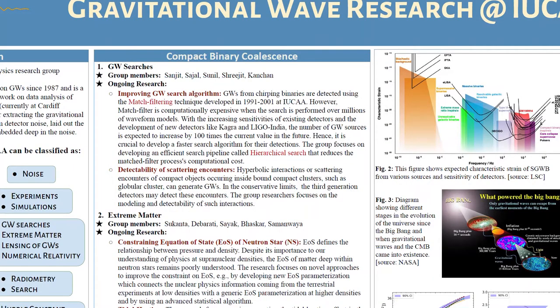Now let us discuss about the group that is working on compact binary coalescence or CBC. CBC means stellar mass objects which are interacting with each other and emitting gravitational waves, for example merging black holes or merging neutron stars or neutron star black holes. So let us first discuss about the searches. These are the group members and let us discuss about two projects here.